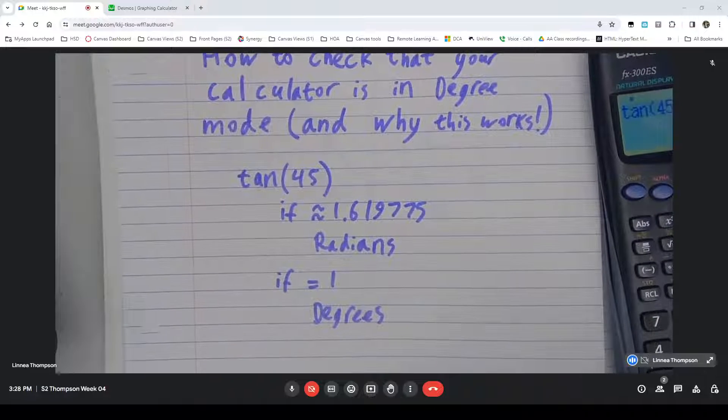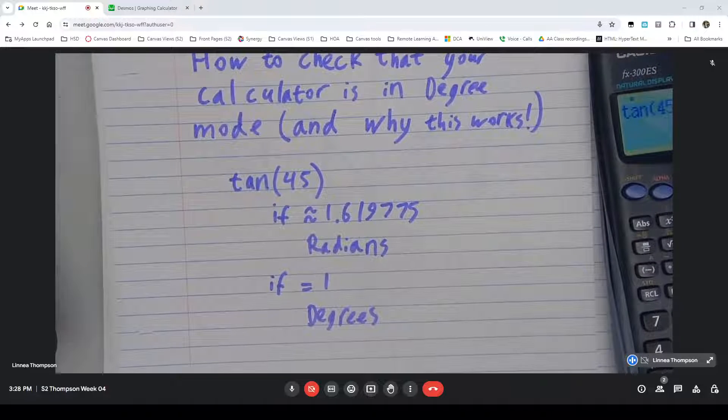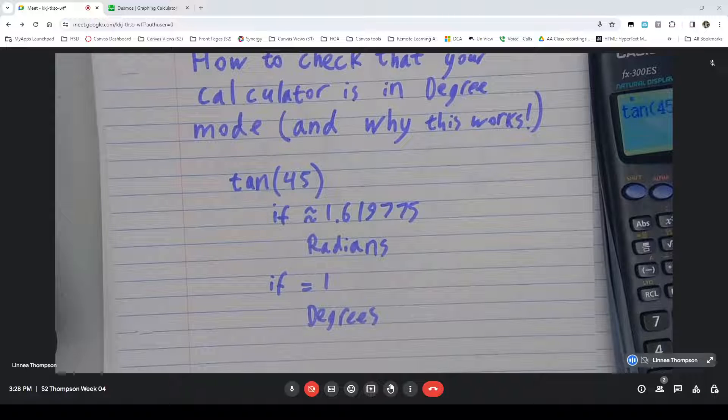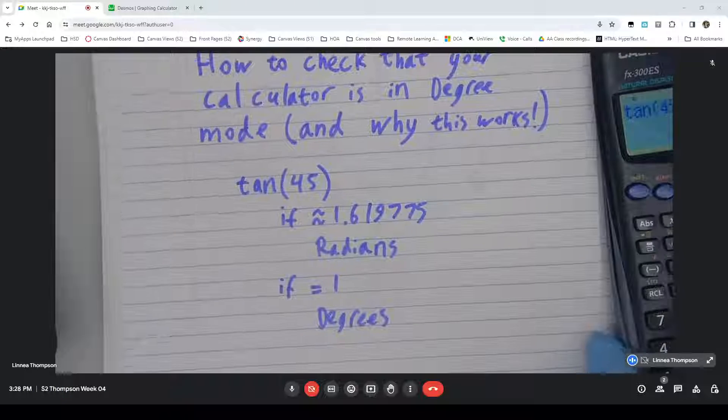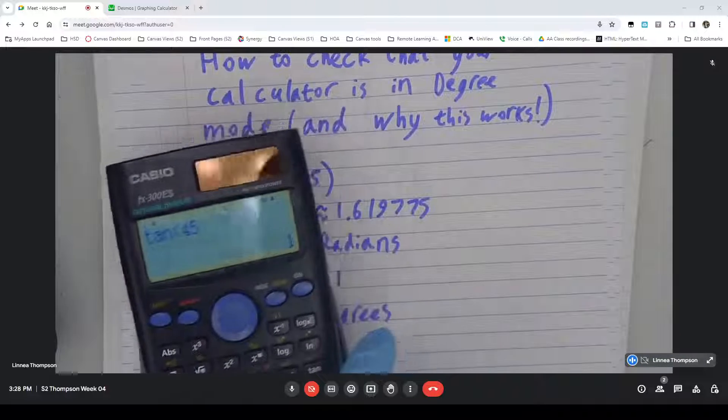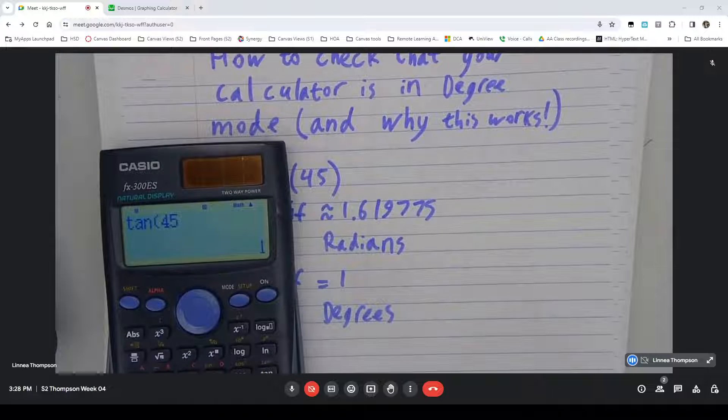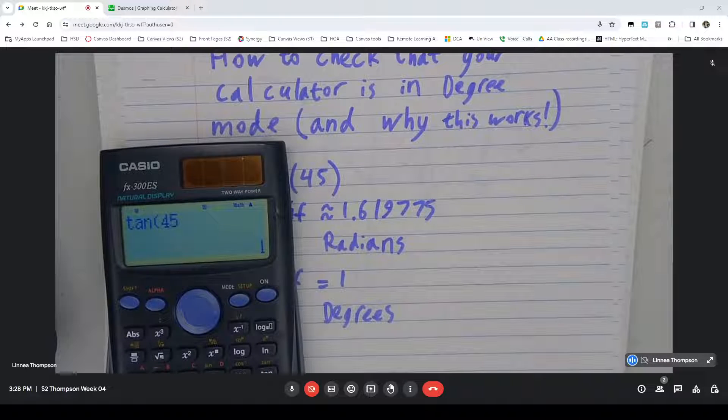So a good habit to get into whenever you're using a calculator that you're not entirely sure what the settings are for some reason. Maybe it's one you share with somebody else. Maybe it's one you don't use regularly. Maybe you can't remember what you used last. Just type in tangent of 45 and see which of these you get. And if it's not the one you need then change the setting on the calculator.